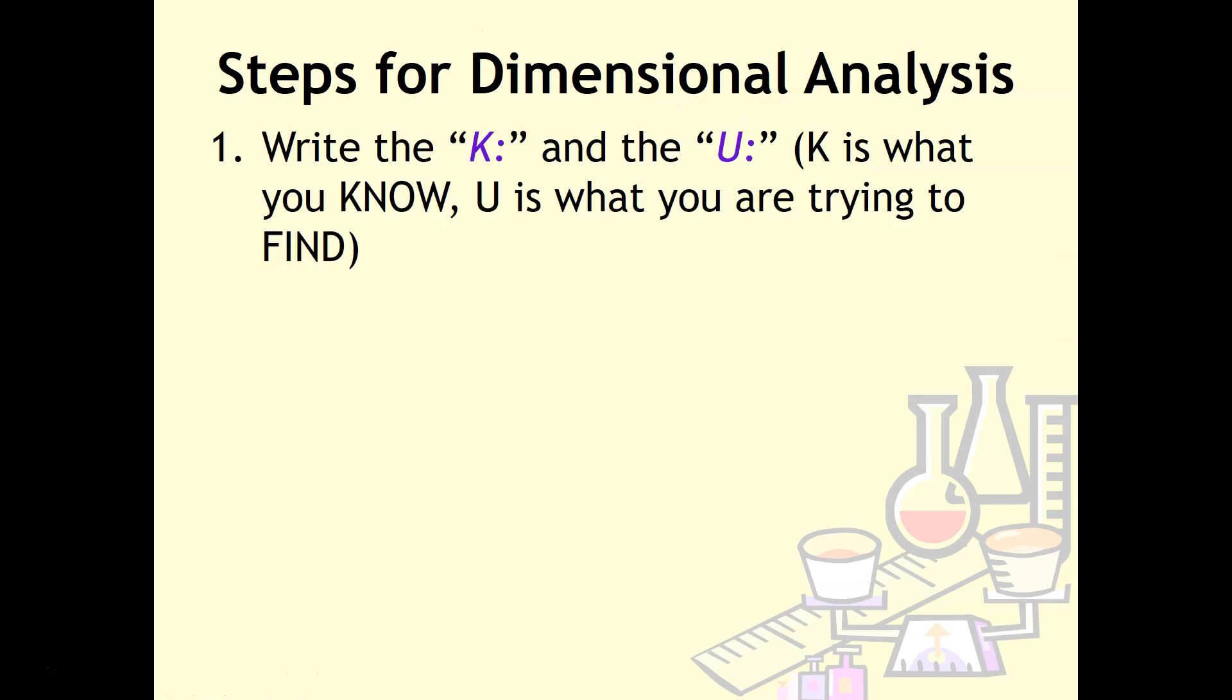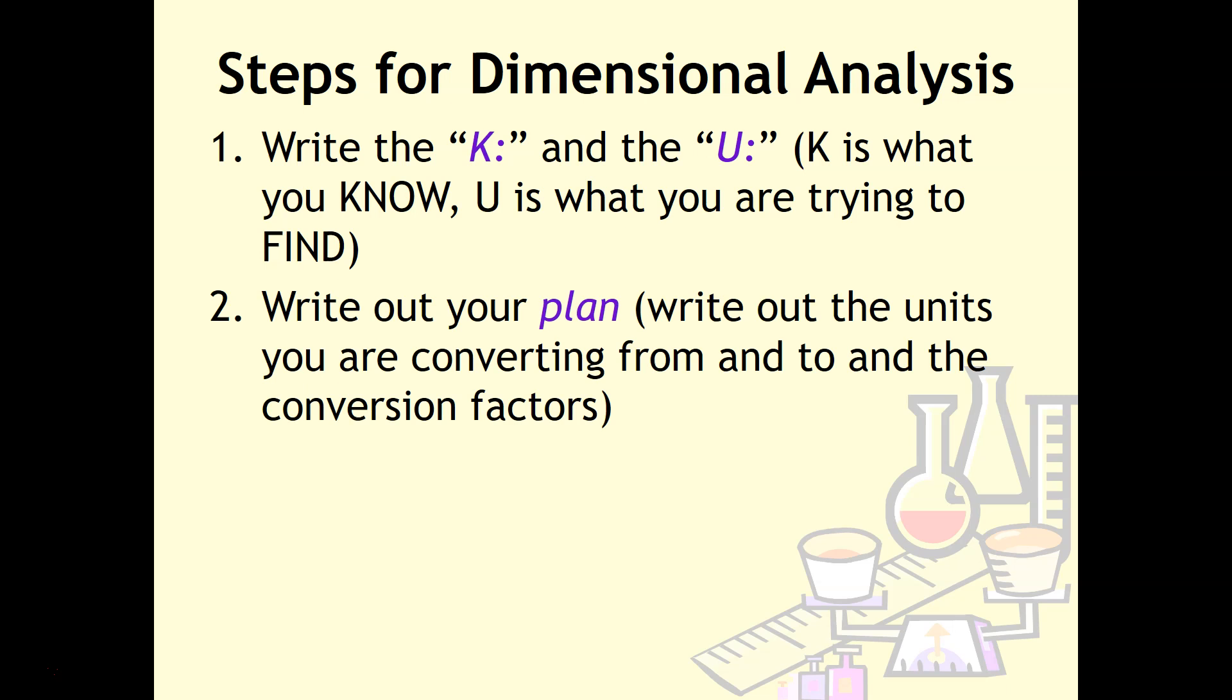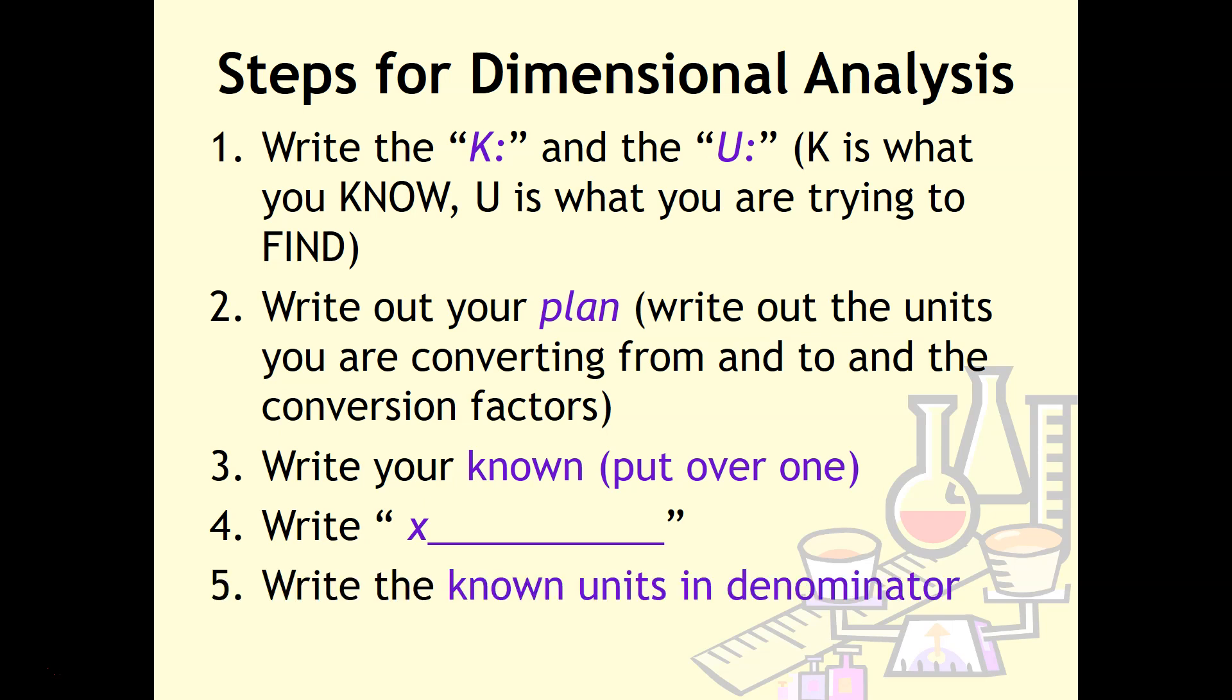Let's talk about the steps for dimensional analysis. These steps help my students, especially when they don't know where to start. Step 1: Write the K and U—K is what you know, U is what you're trying to find. Step 2: Write out your plan—the units you're converting from and to, and the conversion factors. Step 3: Write your known and put it over one. Step 4: Write a multiplication sign and a line. Step 5: Write your known units in the denominator. These are suggested steps, especially when you're just starting out. My students typically won't do all these steps all the time, but since you're just starting, I recommend doing every single one. When it gets easier, you may not need to do as many.